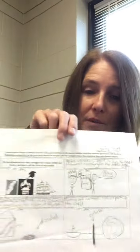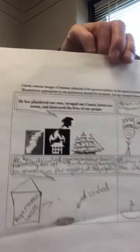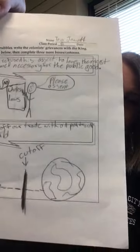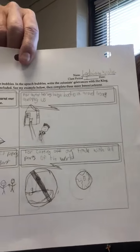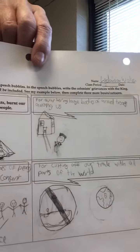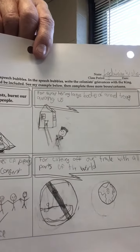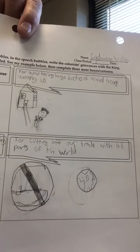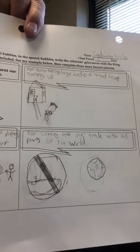I want to show you guys some of the examples of the student answers for the grievances illustrations. I wanted you to write a grievance in the box and then illustrate it. This one is doing the Quartering Act — that's why they've got a soldier going into someone's home. They've also got the world and trading being cut off because the king cuts off trade.